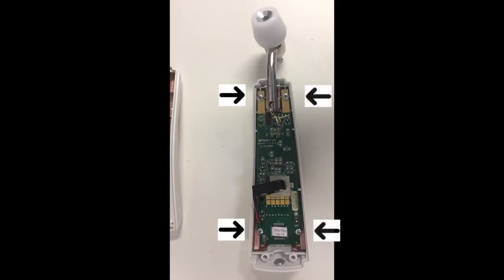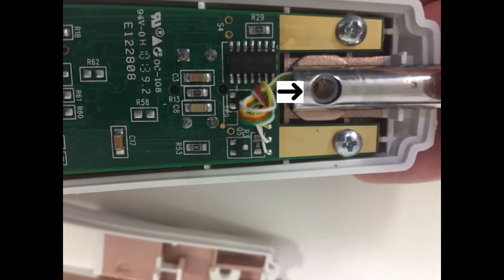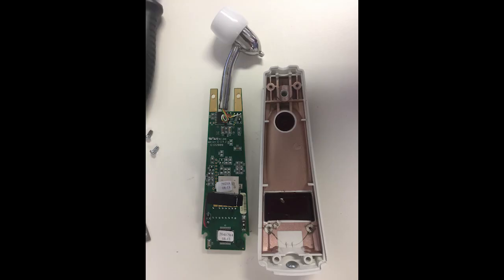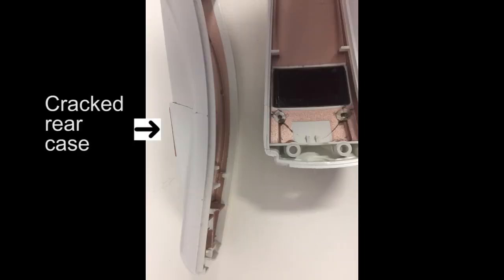Once the case is opened there are four self-tapping screws to remove. And the detector is held in with this little plastic tube. In this case you can see the case is cracked and also the back case is also cracked.